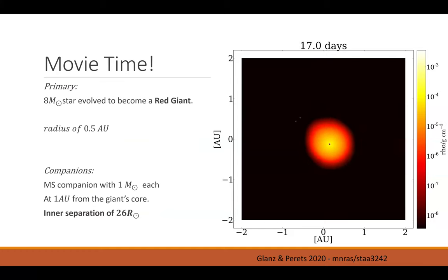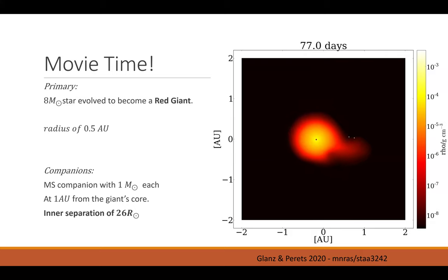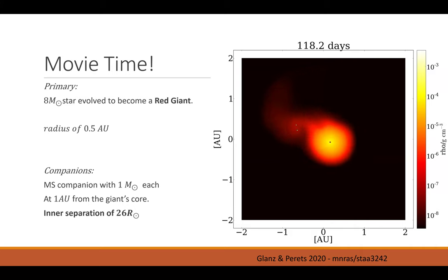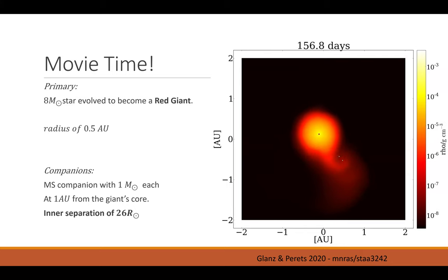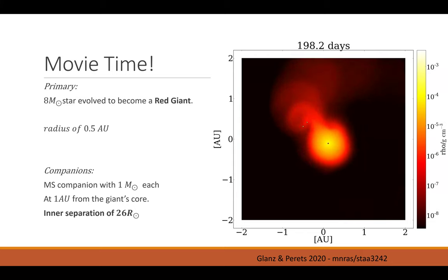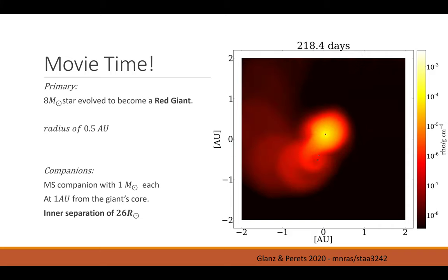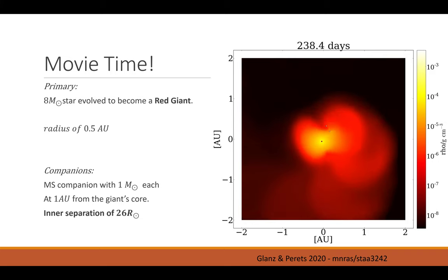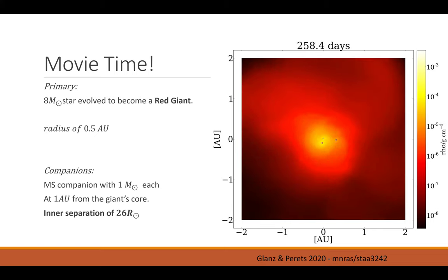Now another movie. This is the same system from the first movie, but now we have a three-body system. Again it's an 8 solar mass red giant, and now we have an inner binary where each component has one solar mass. Initially their center of mass is located at twice the size of the giant. The inclination is zero and the separation is 26 solar radii, making an initially stable system. But its binding energy is not large enough to overcome the tidal forces. They get closer to the stellar core, the system is disrupted, and at the end one of the components merges with the core while the other remains on a longer period orbit.